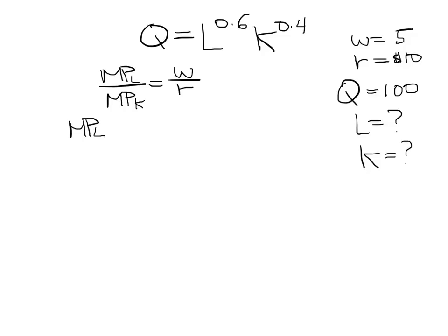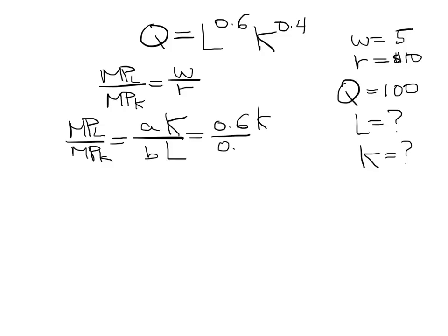We also derived the ratio of the marginal productivity of labor to capital for a typical Cobb-Douglas production function. This ratio — the slope of the isoquant — equals the output elasticity of labor times K, divided by the output elasticity of capital times L. Since we know the exponent values, we can plug them in: the ratio becomes 0.6K over 0.4L, which simplifies to 1.5K over L.